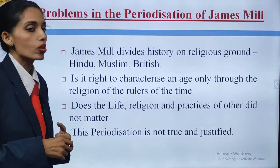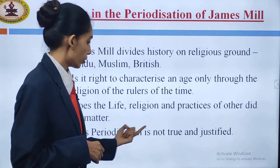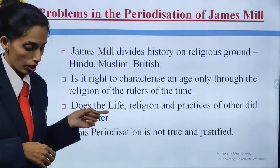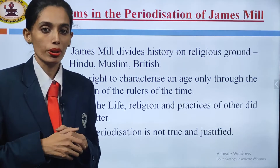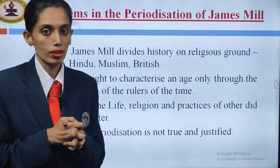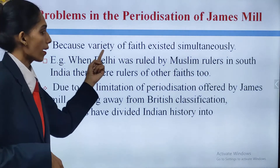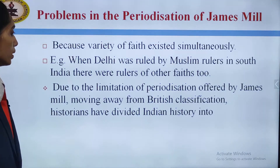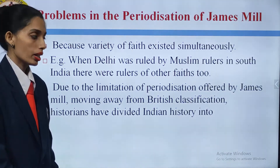This periodization is not true and justified. We cannot say that this periodization what James Mill had offered is true or justified. He had divided whatever he saw when he came. But this is not the correct periodization. In the starting, the historians of India had accepted it, but this is not justified, because variety of faith existed simultaneously. For example, when Delhi was ruled by Muslim rulers, in the south there were rulers of other faiths too.